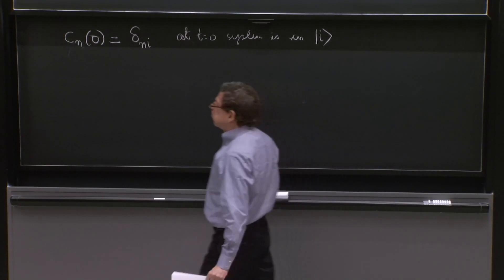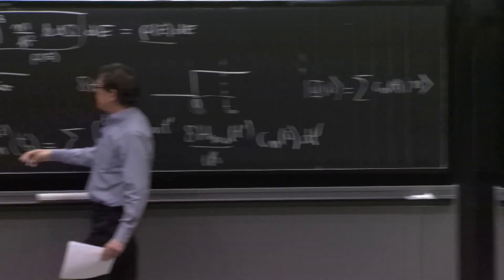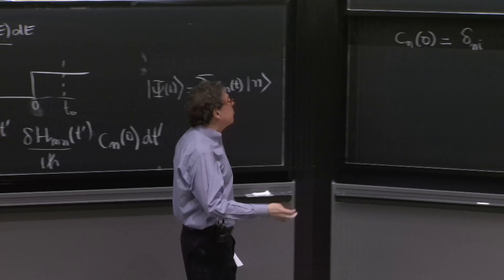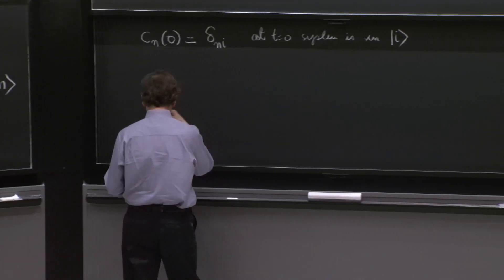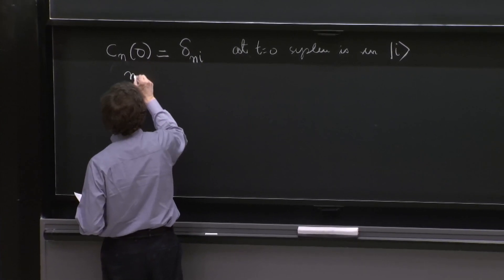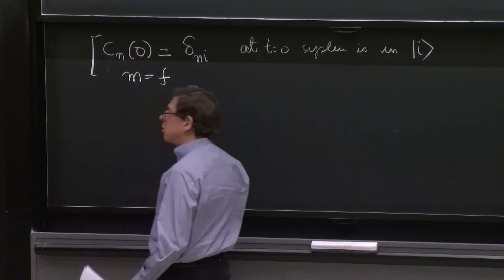And at time t naught, we're asking for the probability to go into a final state. So instead of using n and m, we're just using f and i. And therefore, we'll have m equal f.